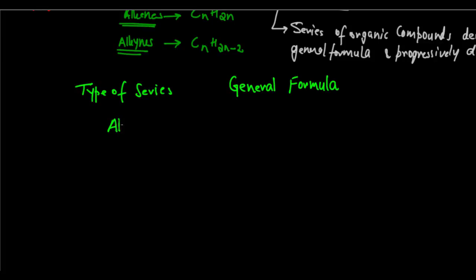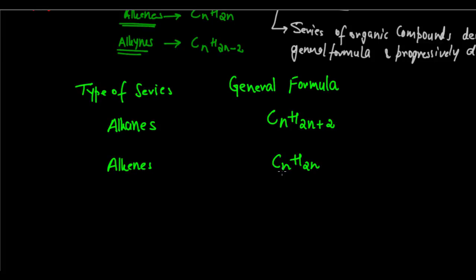Let's tabulate this for a better understanding. For the alkane series, the general formula is CnH2n+2. For the alkene series, it is CnH2n — substitute any value of N to get the corresponding compound. For the alkyne series, the general formula is CnH2n−2. These are the three main homologous series in our course.